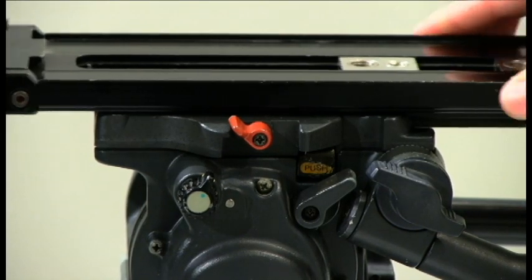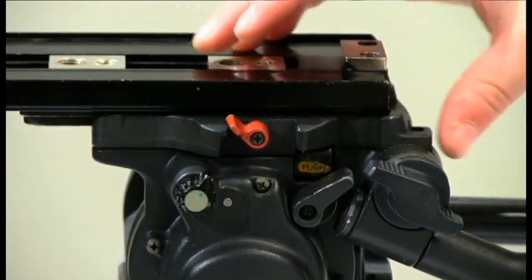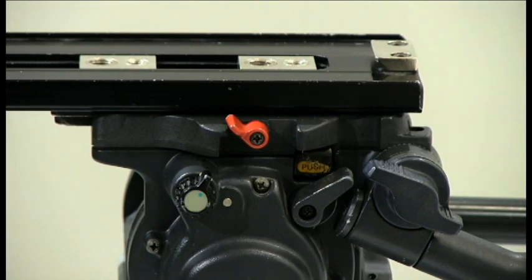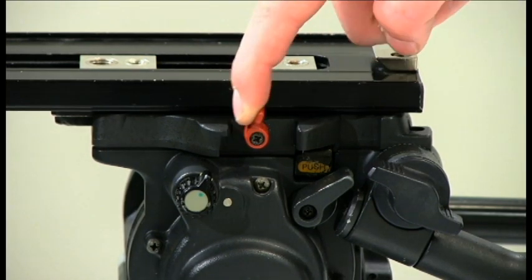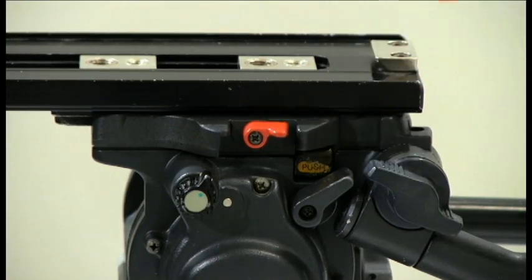Step number 8. When you're done with that, slide the quick release plate back onto the tripod head and tighten down the slide plate lever. Now you're ready to put a camera on and start filming.